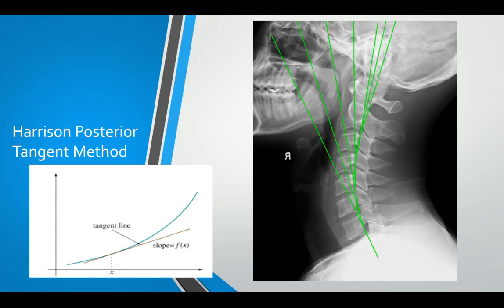When you apply that to the cervical spine, because it's made up of segments that usually have a straight posterior margin, you simply draw along the posterior margins. You can draw the line as long as you like. Where the two lines intersect at the posterior body margin of the segment above, you get a tangent angle right there, and then you measure them all out. You can obviously analyse the spine using this method.